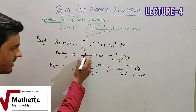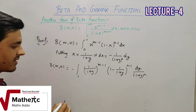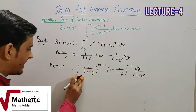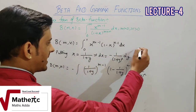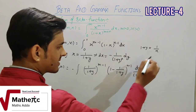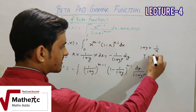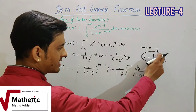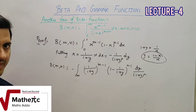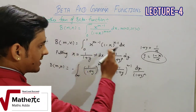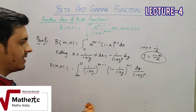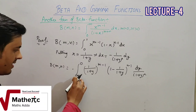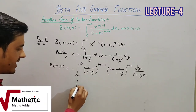जब x की lower limit 0 रखेंगे तो 1/(1+0) = 1, तो y की lower limit निकालनी है। यहाँ से 1+y = 1/x, तो y = (1−x)/x। x की lower limit 0 रखें तो y = 1/0 = infinity, और x = 1 रखें तो y = 0। तो एक ऐसा substitution मिला जिससे limit infinity से 0 हो गई। Definite integration की property से limit interchange करने पर minus plus में convert हो जाएगा।